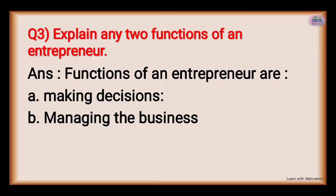Decision making includes deciding what to buy, where to buy, where to sell — all selling, purchasing, planning, idea, and implementation decisions are taken by the entrepreneur. Managing the business covers how to manage and when to sell; all managing of the business is controlled by the entrepreneur.